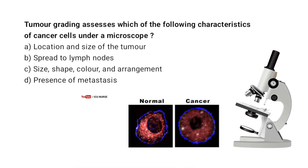Tumor grading assesses which of the following characteristics of cancer cells under a microscope? A. Location and size of the tumor. B. Spread to lymph nodes. C. Size, shape, color and arrangement. D. Presence of metastasis.